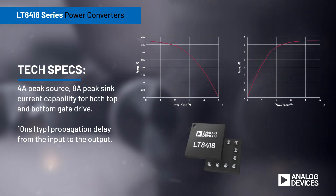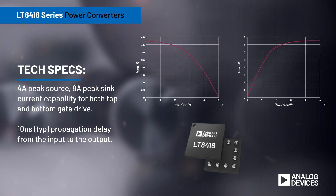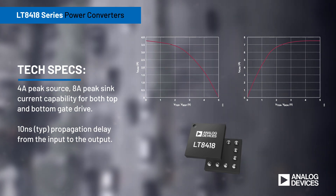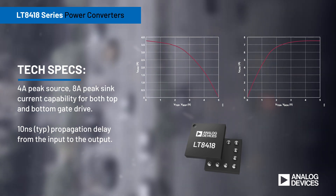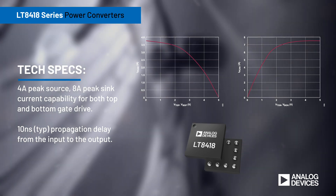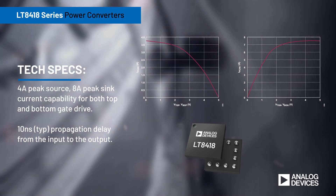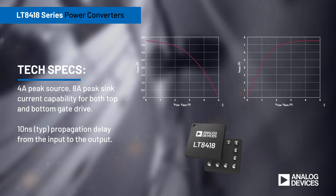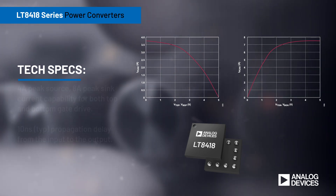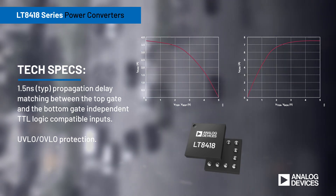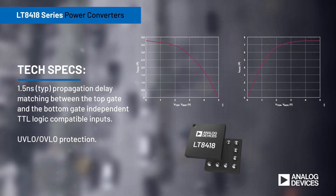Analog Devices' LT8418 100V half-bridge GaN driver delivers strong current sourcing and current sinking drivers for fast switching applications. The LT8418 features low propagation delay from the input to the output and tight delay matching between the top and bottom gates for precise half-bridge operation.